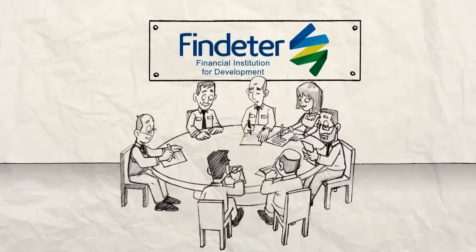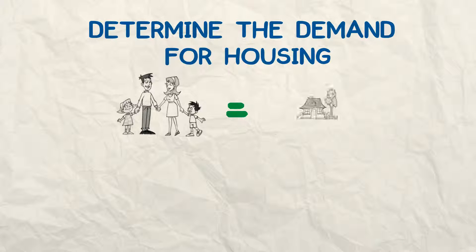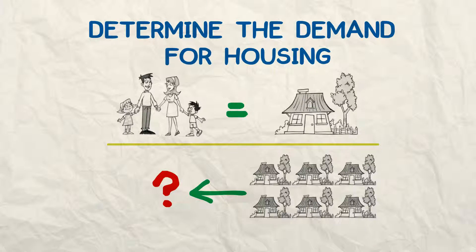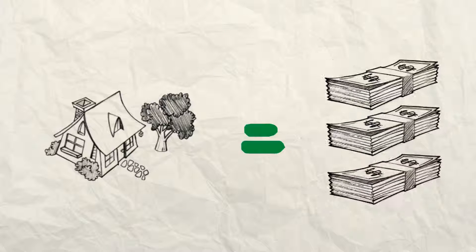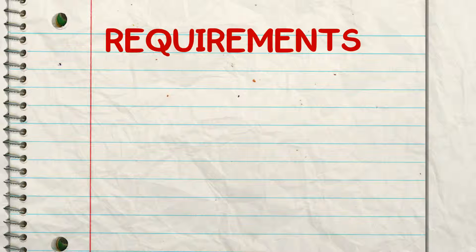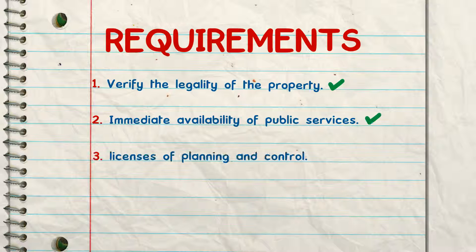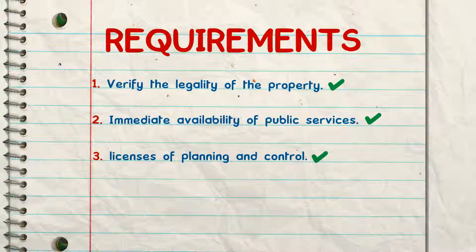The first thing they'll promise is to understand how many houses you'll really need. Then you'll decide what kind of houses you'll give each family and the cost of each one. You'll also need to find out the requirements for the project to be approved — in other words, the basic documents you'll have to submit to Findeter.